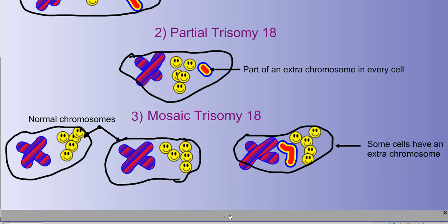Finally, there is Mosaic Trisomy 18. That's what I have. In Mosaic Trisomy 18, you have some normal cells and some that have an extra chromosome. In my case, I have 70% of cells with an extra chromosome.